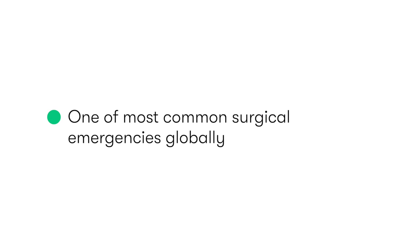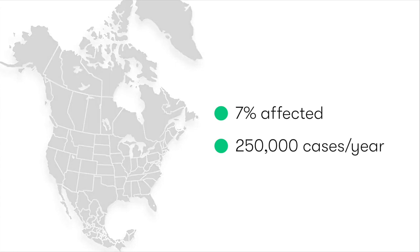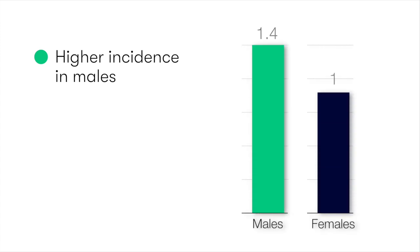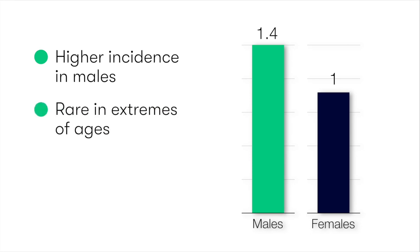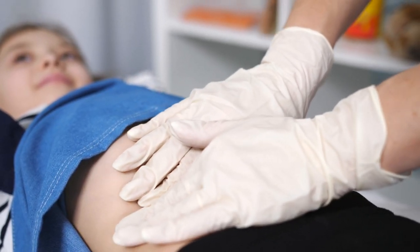Appendicitis is one of the most common surgical emergencies throughout the world. In the US alone, approximately 7% of the population will be affected, equating to about a quarter million cases every year. Men have a higher incidence, with 1.4 cases to every one female case. Appendicitis is more rare at extremes of age, so we don't often see it in very young children or very elderly adults, and it's far more common in adolescents and young adults.